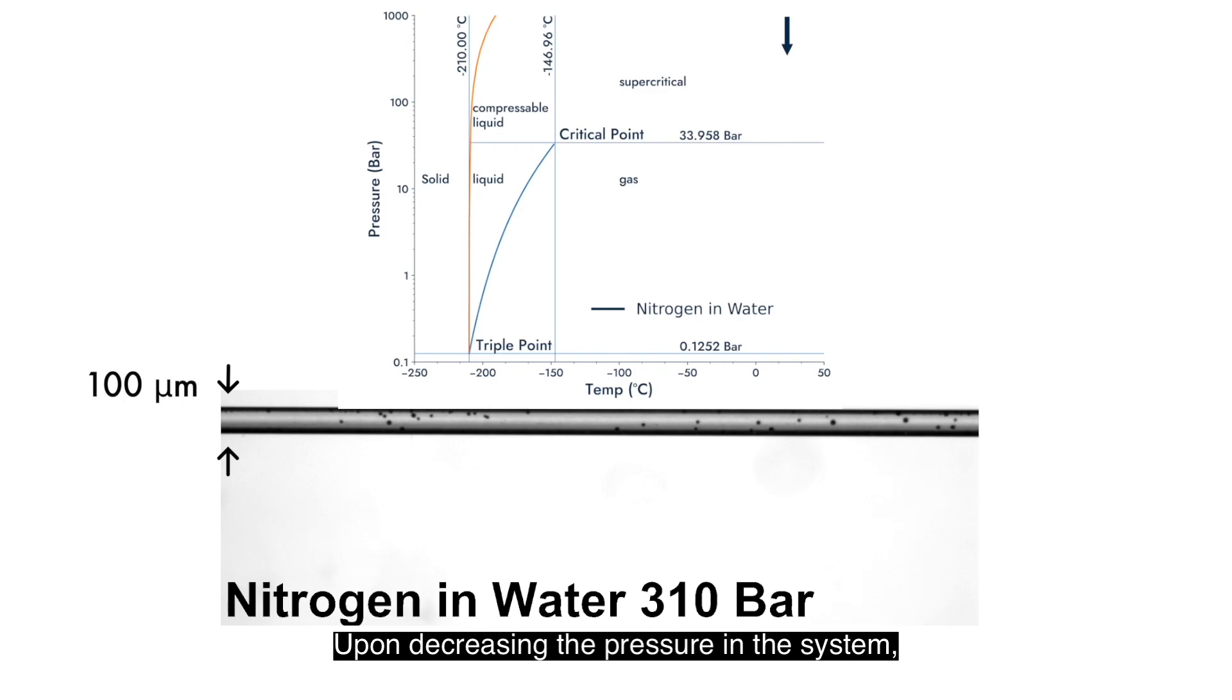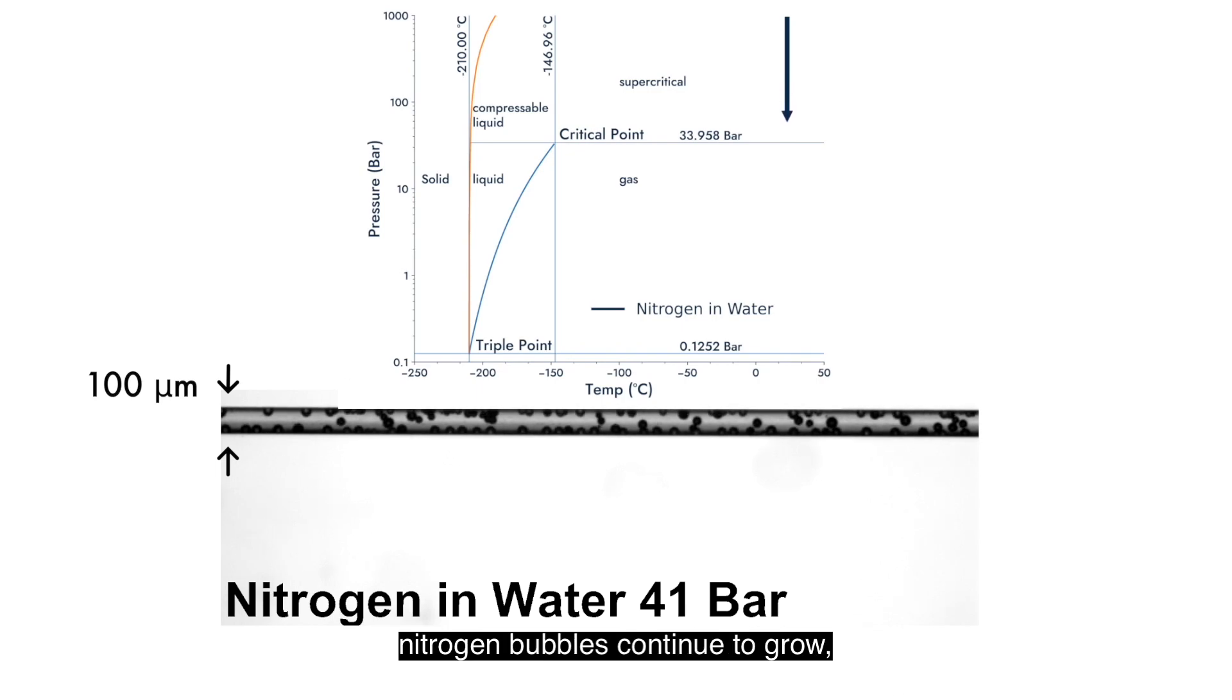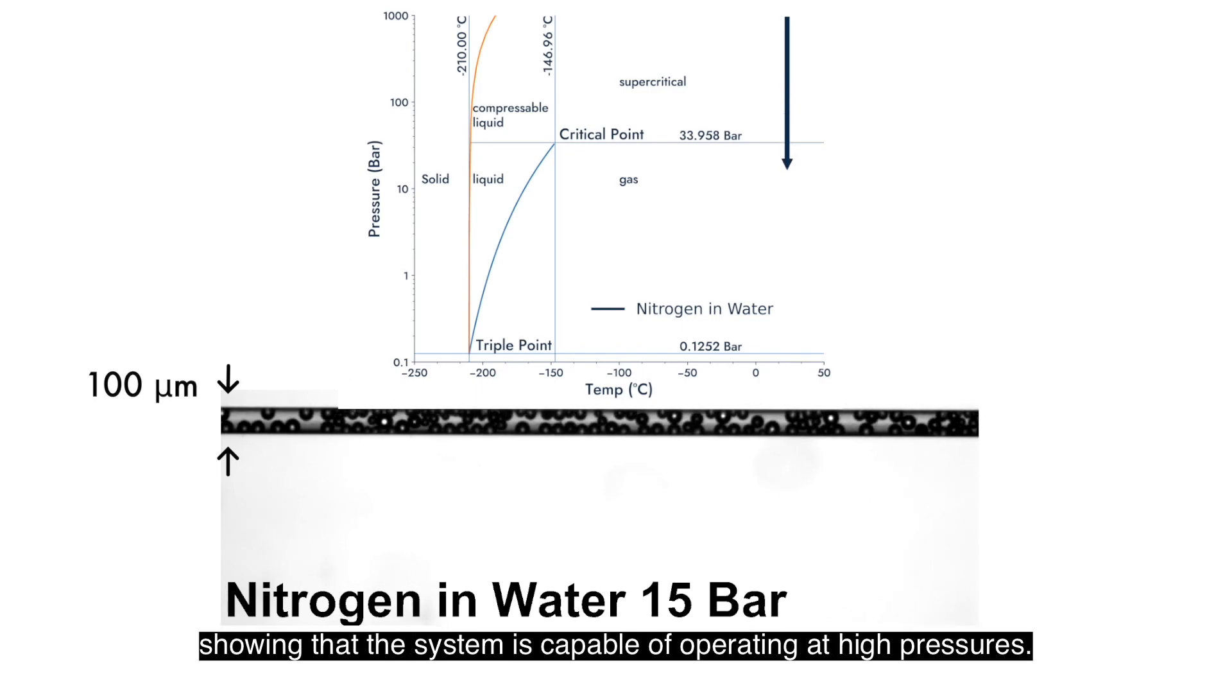Upon decreasing the pressure in the system, nitrogen bubbles will start to form, which can be seen with a microscope. When the pressure is decreased again, nitrogen bubbles continue to grow, showing that the system is capable of operating at high pressures.